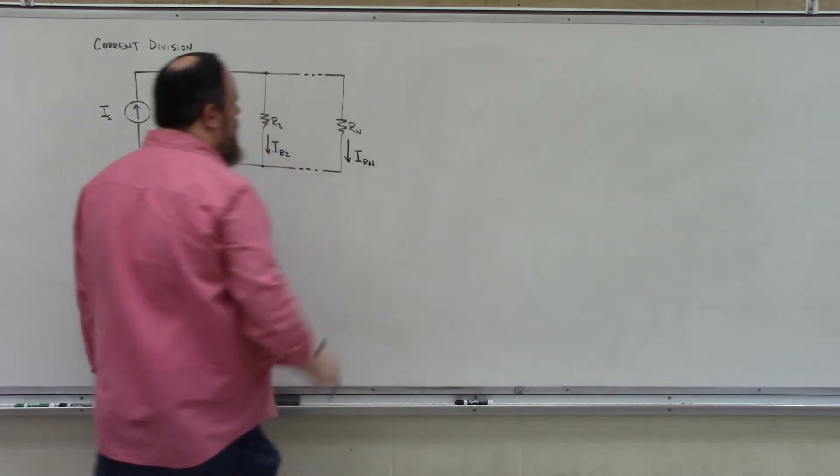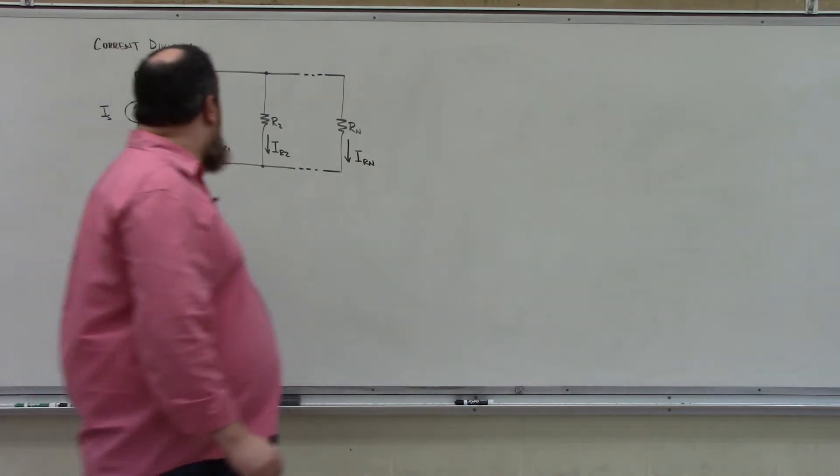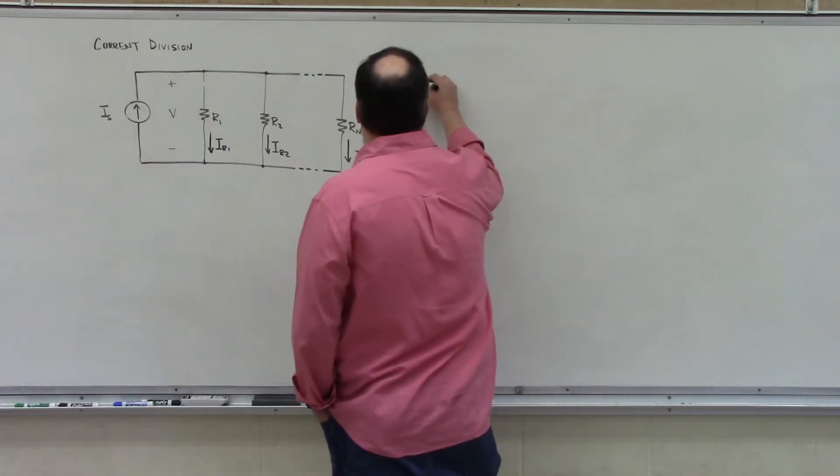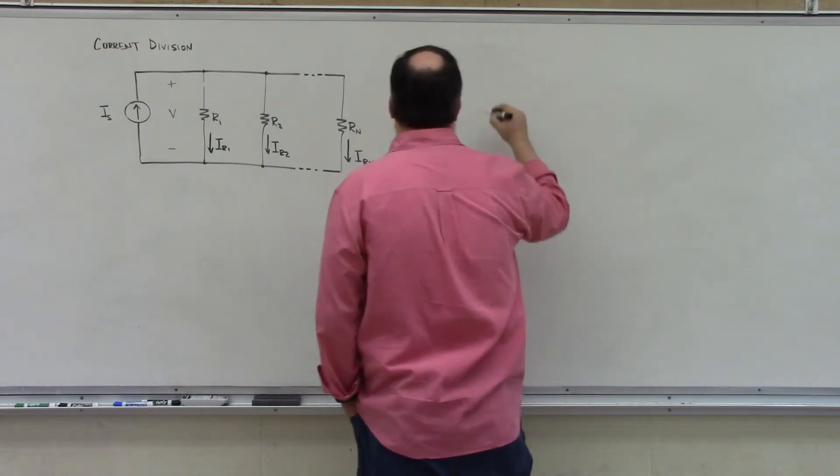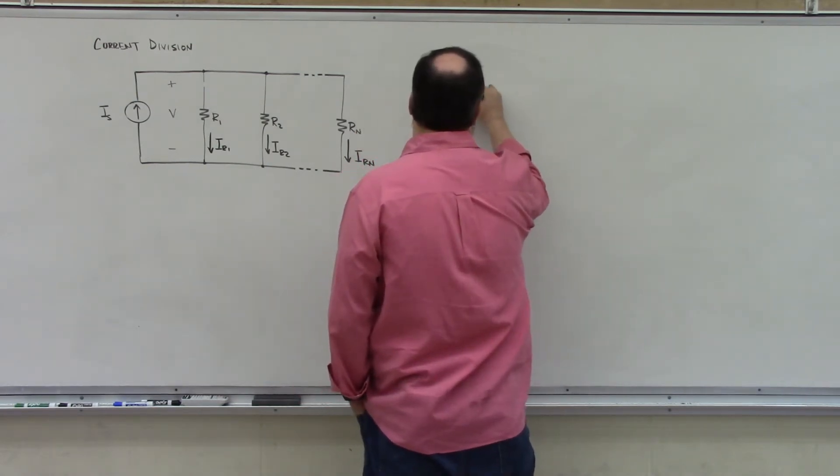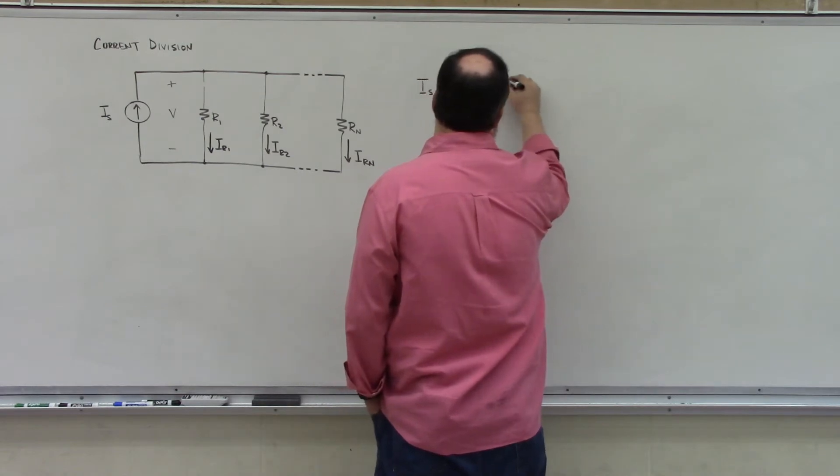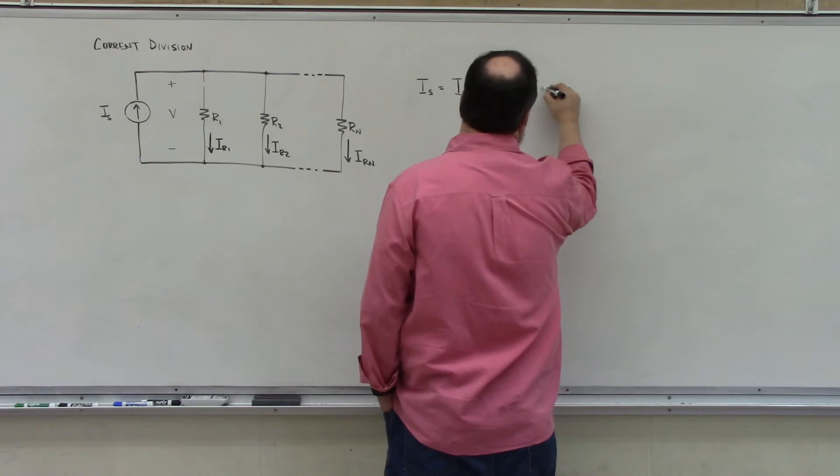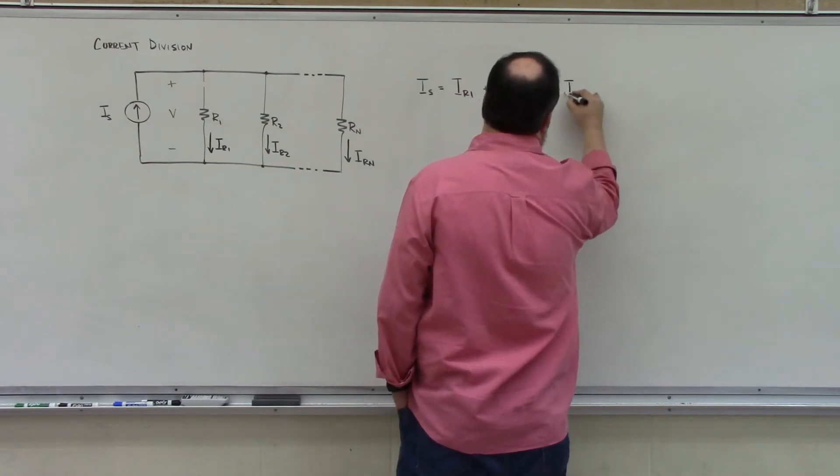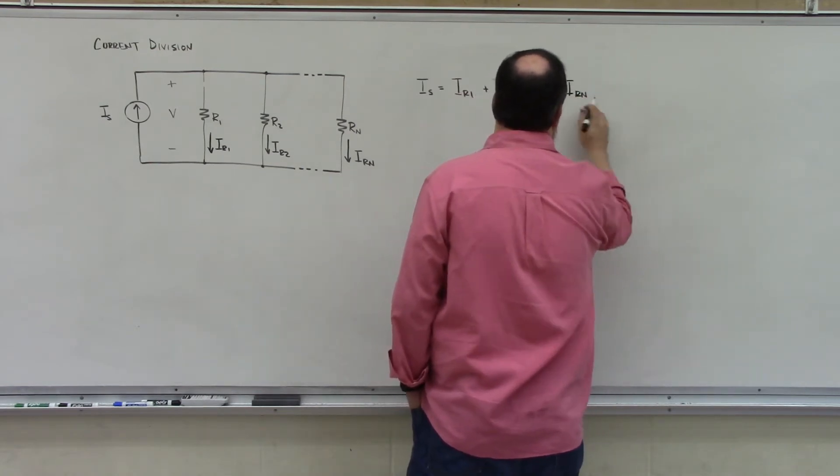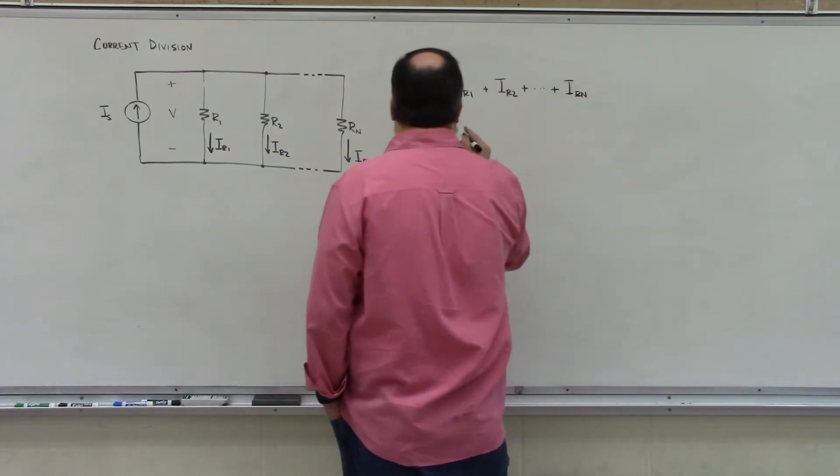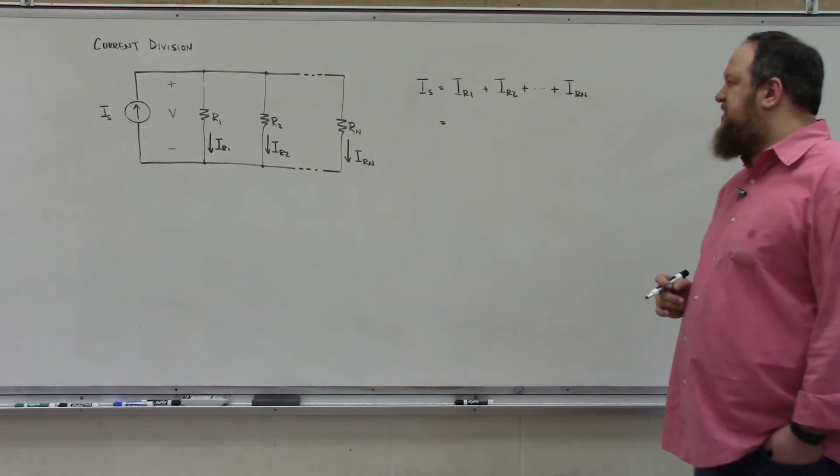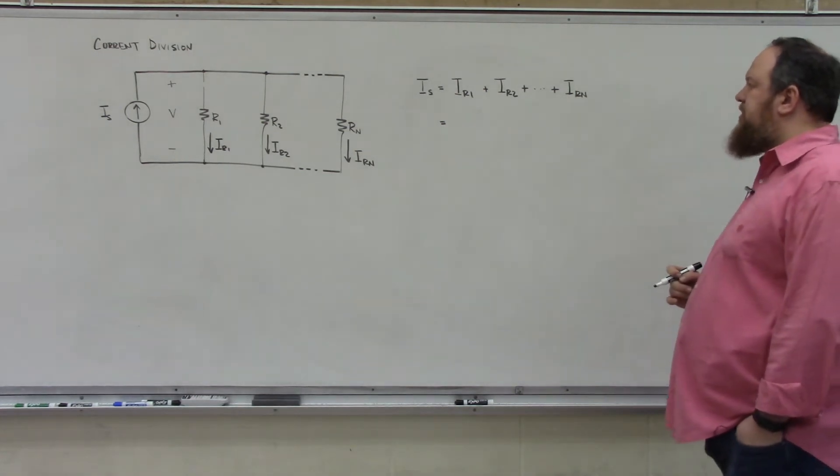I can write a Kirchhoff's current law equation for this system where IS, the source current, will be equal to IR1 plus IR2 plus IRN. And I can then use Ohm's law to express all of these resistor currents in terms of that common voltage V.